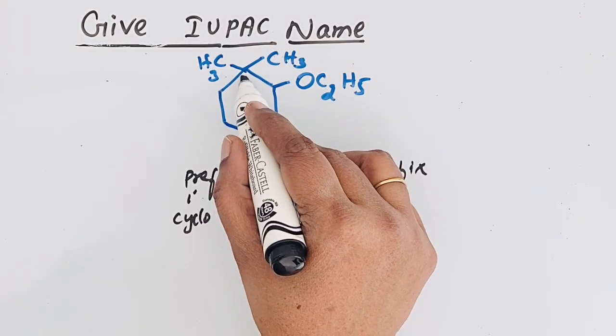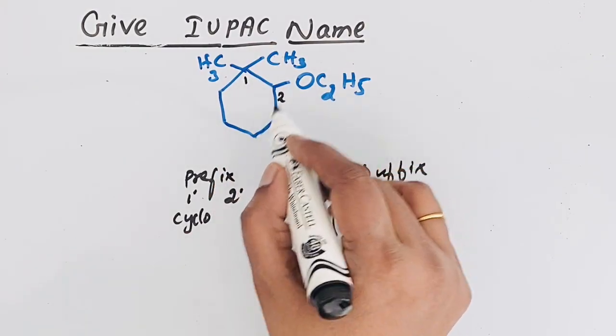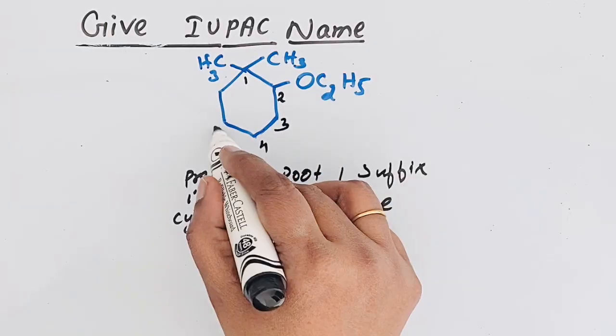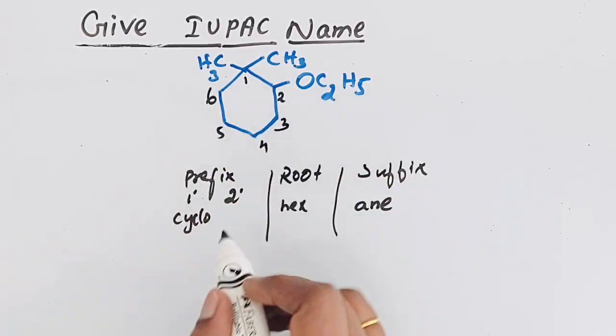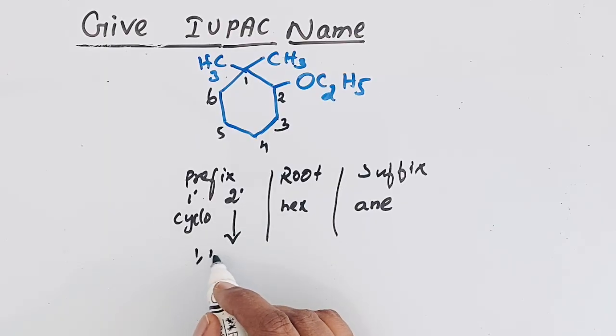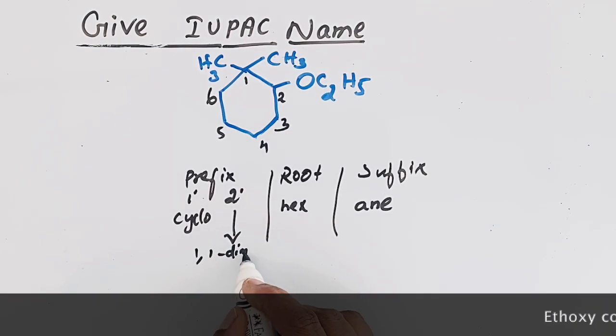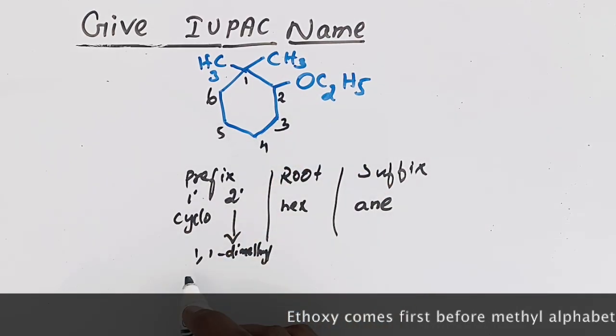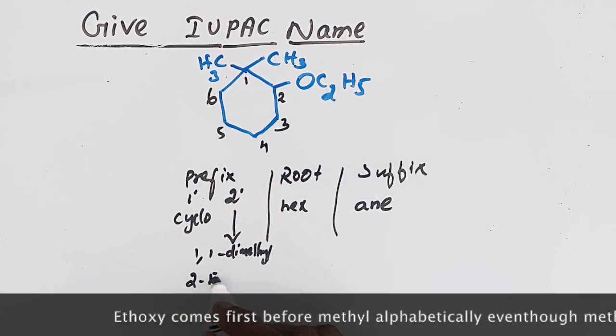So we are going to give that the lowest number one. So two, three, four, five, six. We write for the secondary prefix: 1,1-dimethyl. Then in the second position we have 2-ethoxy.